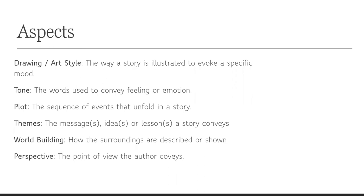I looked at five different graphic novels and comics, all findable at UCF libraries. I reviewed them using six aspects: drawing and art style — how a story is illustrated to evoke a specific mood; tone — the words used to convey feeling or emotion; plot — the sequence of events; themes — the messages, ideas, or lessons a story conveys; world building — how the surroundings are described or shown; and finally perspective — the point of view the author conveys.